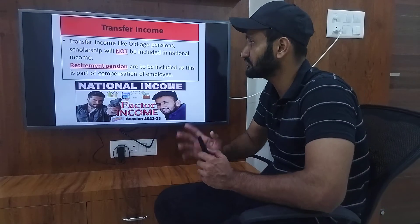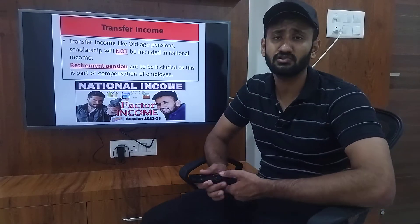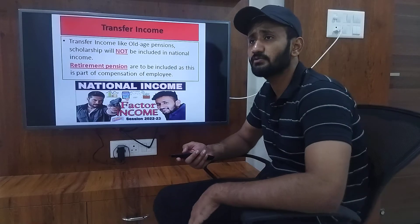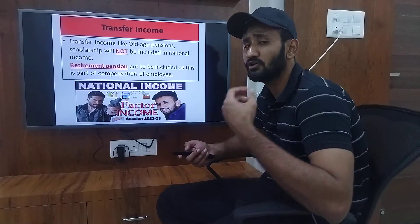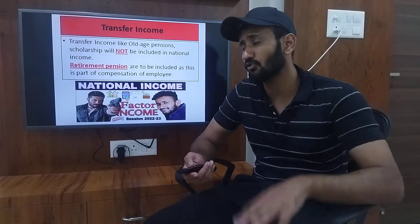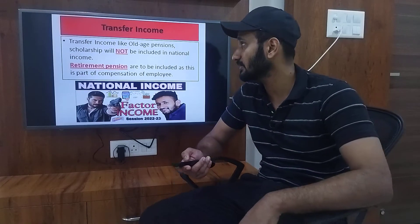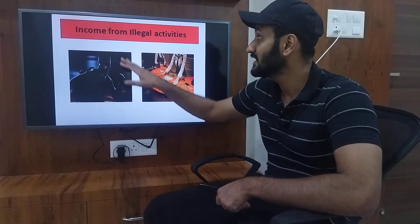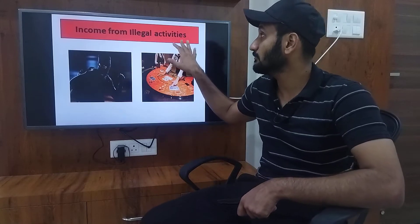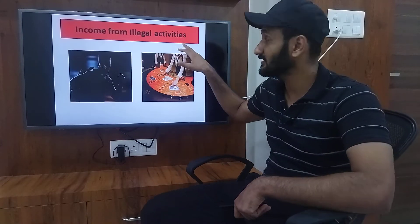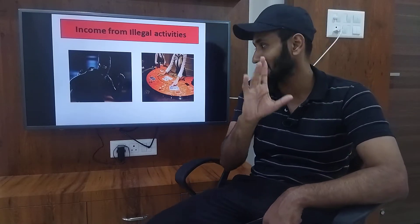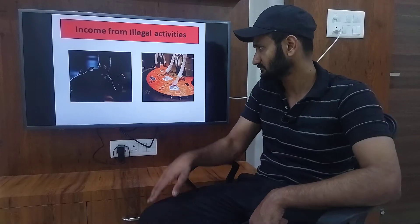Alright, so the transfer income point is clear. Let's move on to the second precaution of income method. The second precaution is income from illegal activities — and this is in red, meaning it is not to be included.